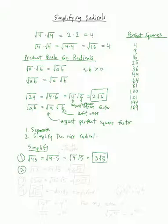Let's try the square root of 12. The largest perfect square that goes into 12 is 4. So I write this as the square root of 4 times the square root of 3, which is 2 square root of 3. Notice I jumped writing out the 4 times 3 step — you can skip straight to separating the radicals. That's totally fine.